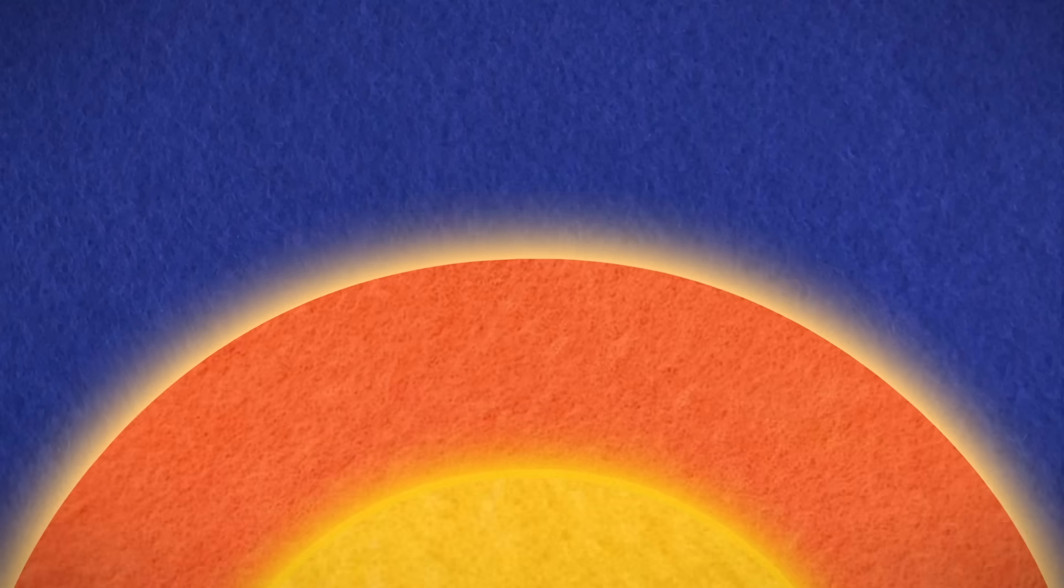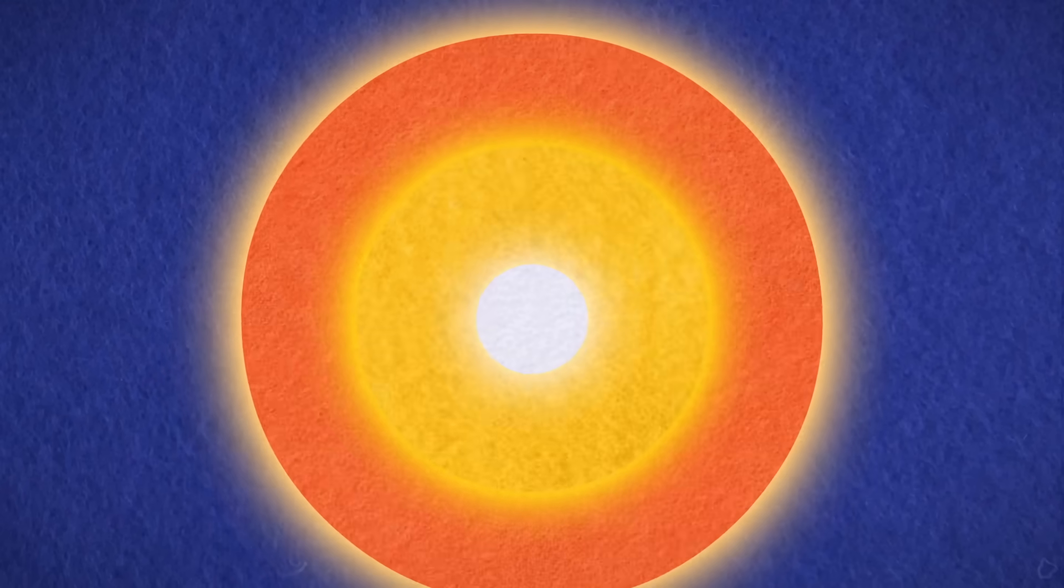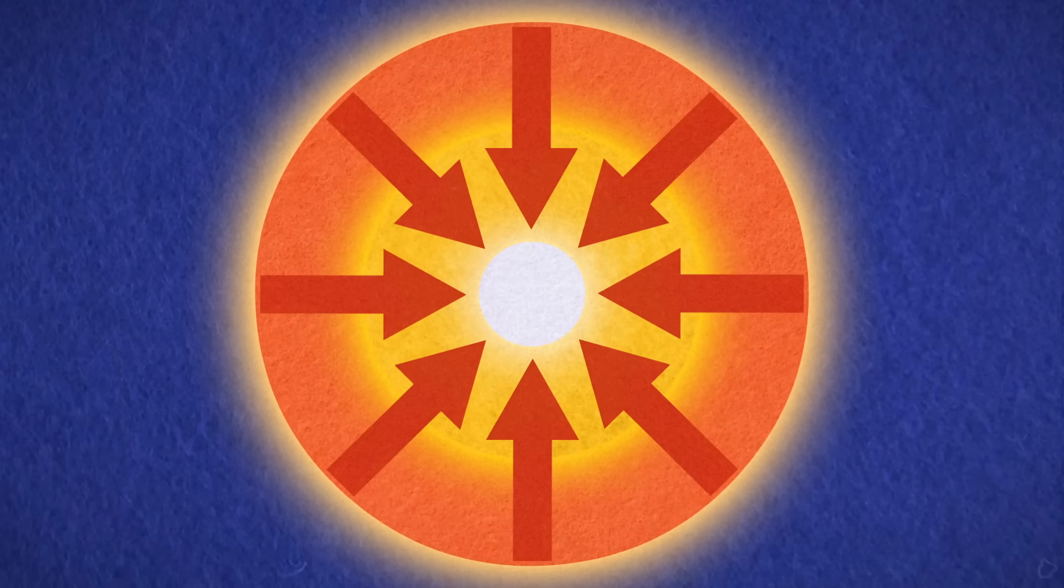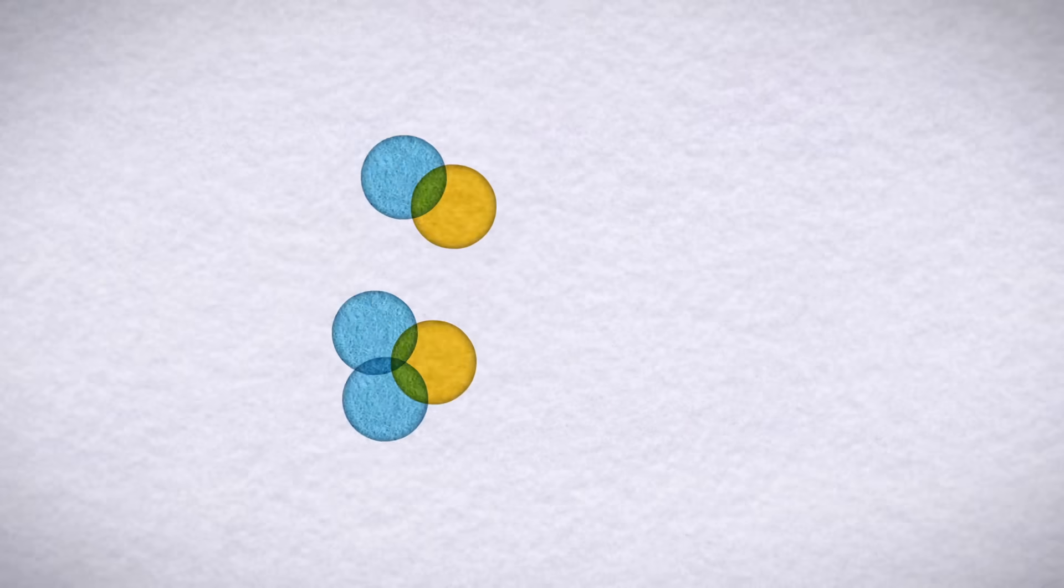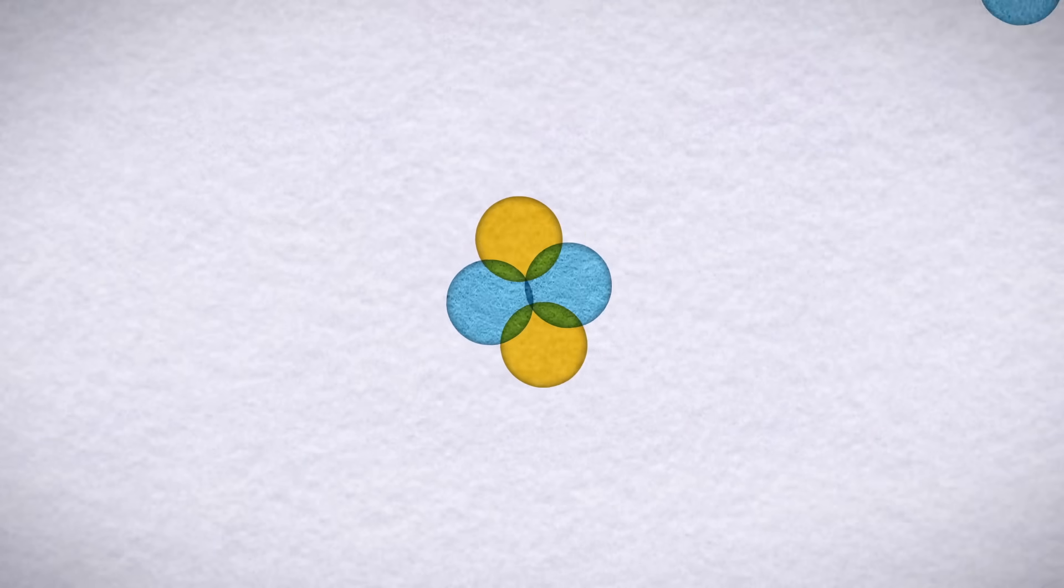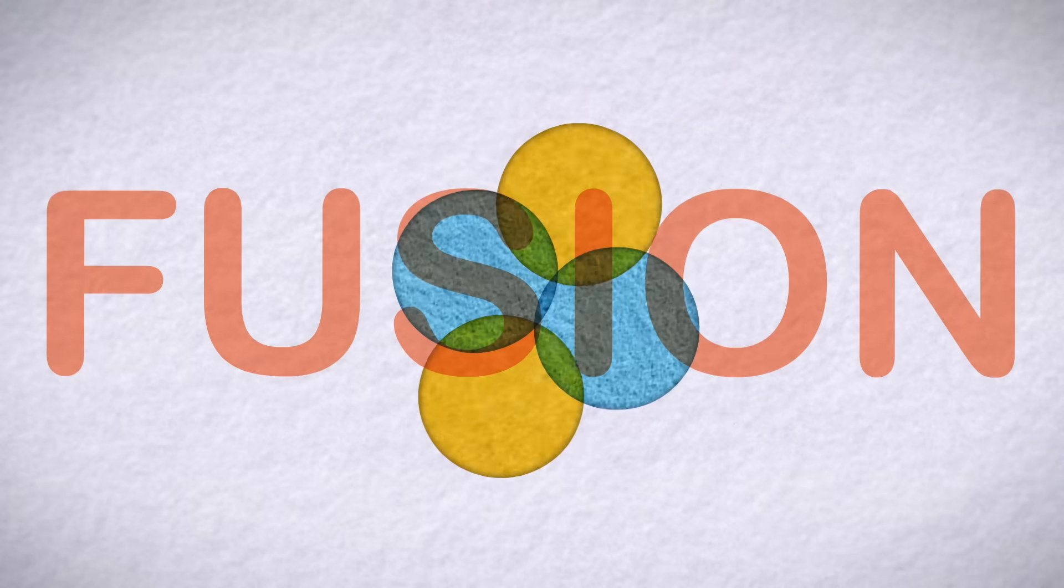Stars are made of an almost incomprehensible number of particles, which gravity compresses into a super-dense core. This core is hot and dense enough to force atomic nuclei together, forming larger, heavier nuclei in a process known as fusion.